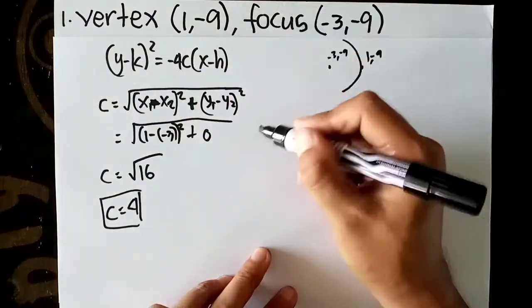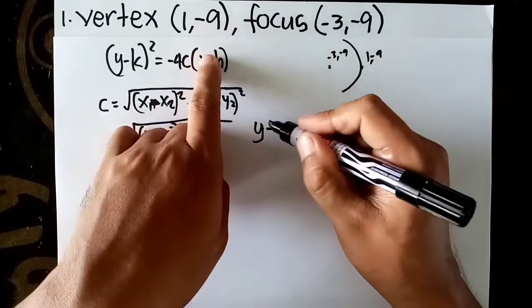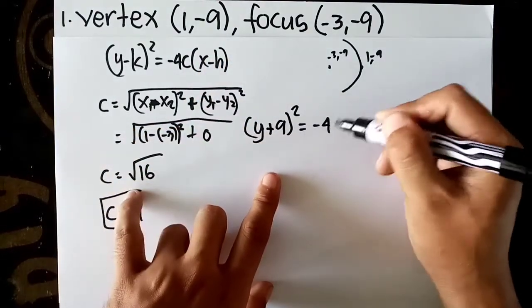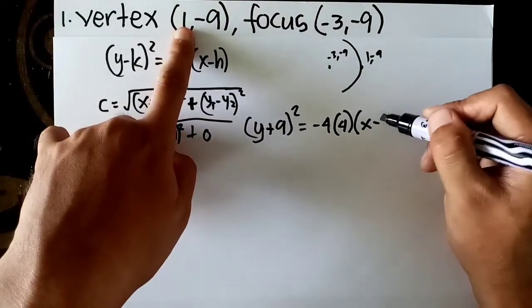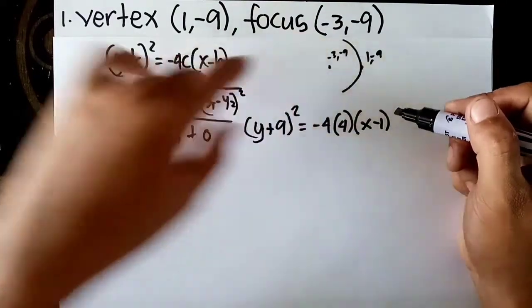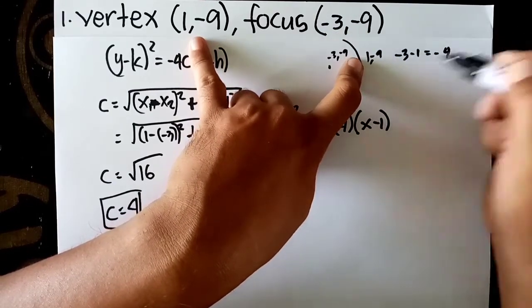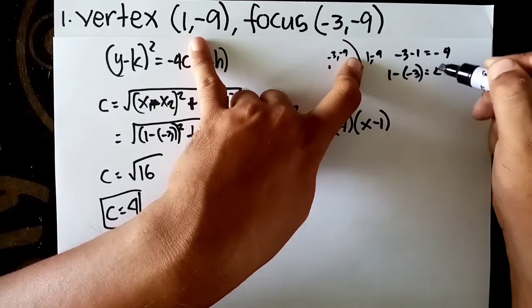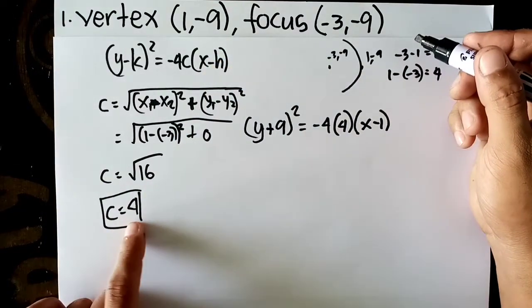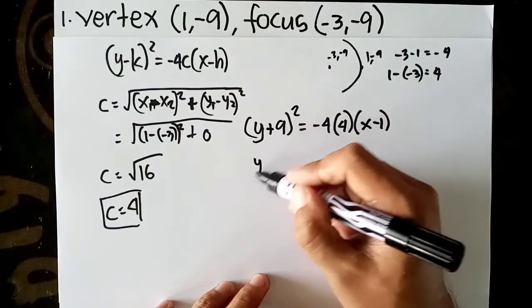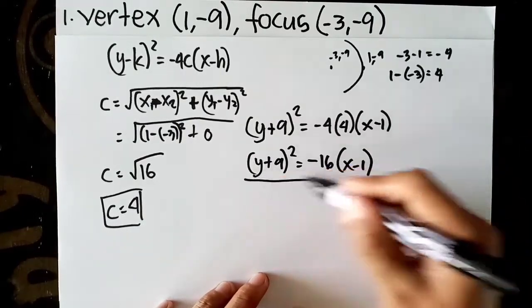Substitute the values. y minus k, where k is -9, so it becomes (y + 9). Squared equals -4 times c, which is 4, so -16, times (x - 1). Note: distance is always positive, so don't be confused by the sign. Your final answer is (y + 9)² = -16(x - 1).